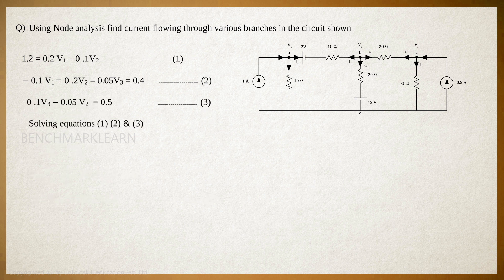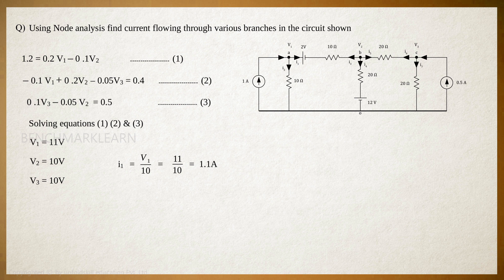Solving equations 1, 2, and 3, we get V1 is equal to 11 volts, V2 is equal to 10 volts, and V3 is equal to 10 volts. Branch current I1 is equal to V1/10, which is equal to 11/10, which is equal to 1.1 ampere. I2 is equal to (V1 − 2 − V2)/10, which is equal to (11 − 2 − 10)/10, which is equal to −0.1 ampere.